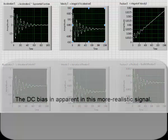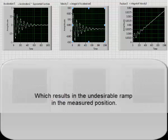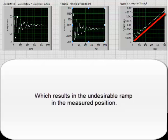The DC bias is apparent in this more realistic signal, which results in the undesirable ramp in the measured position.